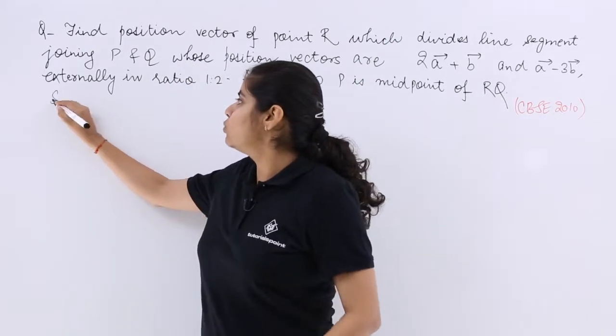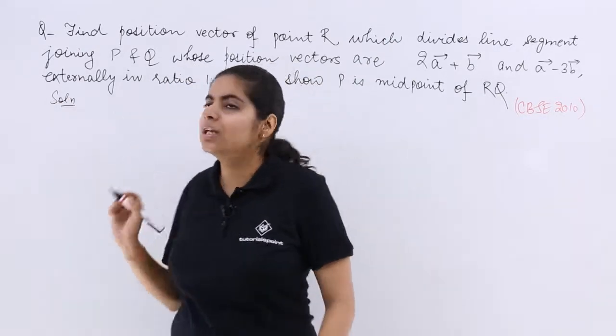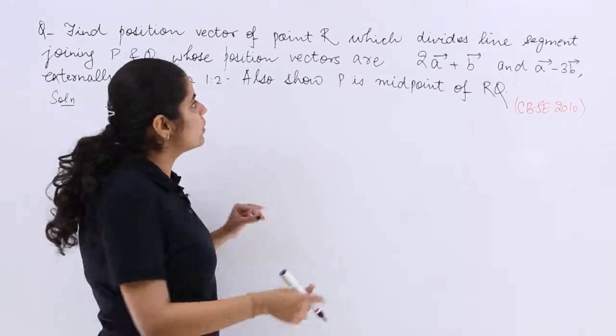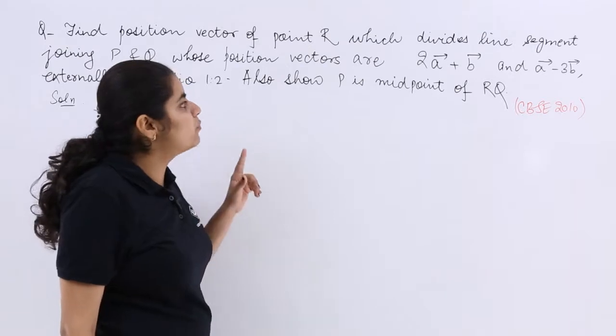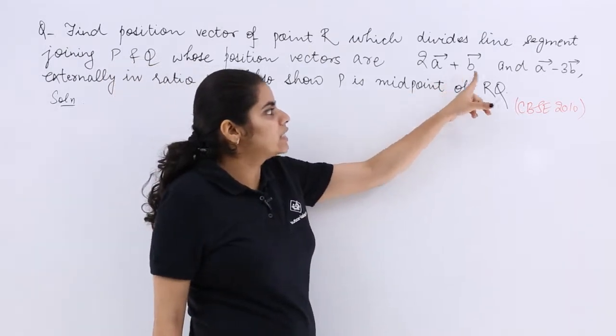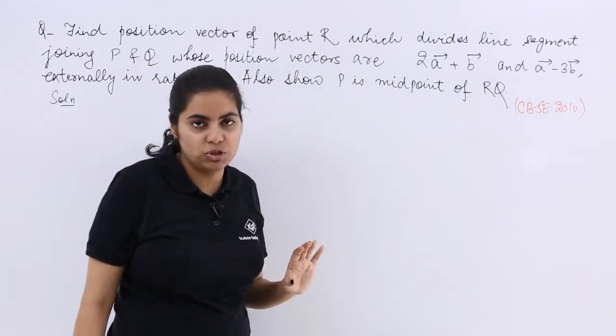So let me write solution. Do not panic with the length of the question. Let's move step by step. So I have been given that I need to find out the position vector of the point R. I have been given that P has this position vector, Q has this position vector.